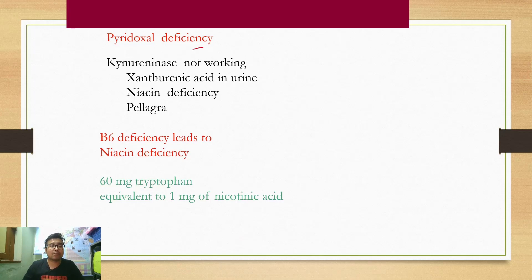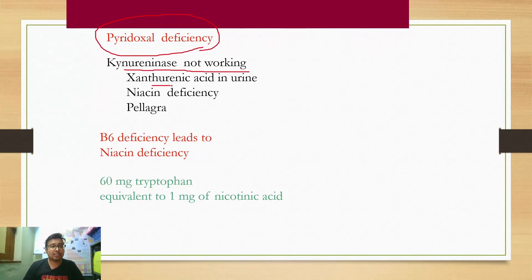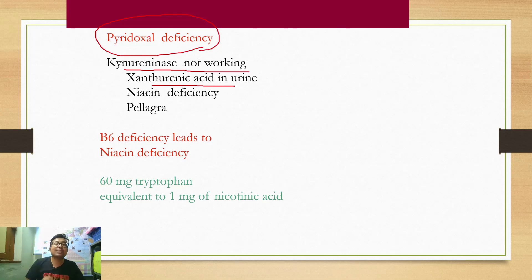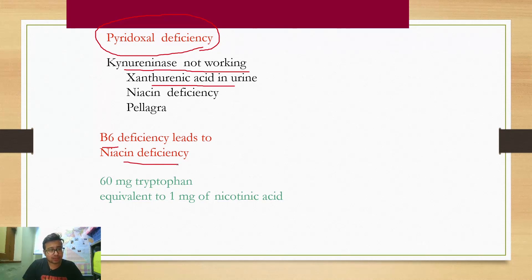In case of pyridoxal phosphate deficiency, kynureninase will not act, meaning xanthurenic acid will be excreted in urine — it is a marker of pyridoxine deficiency. But that is not enough: niacin deficiency will happen because NAD+ will not be synthesized, and ultimately it will lead to pellagra. So B6 deficiency leads to niacin deficiency. Note: 60 mg of tryptophan is equivalent to 1 mg of nicotinic acid, but you do not need to remember that — it is for pharmacological purposes.